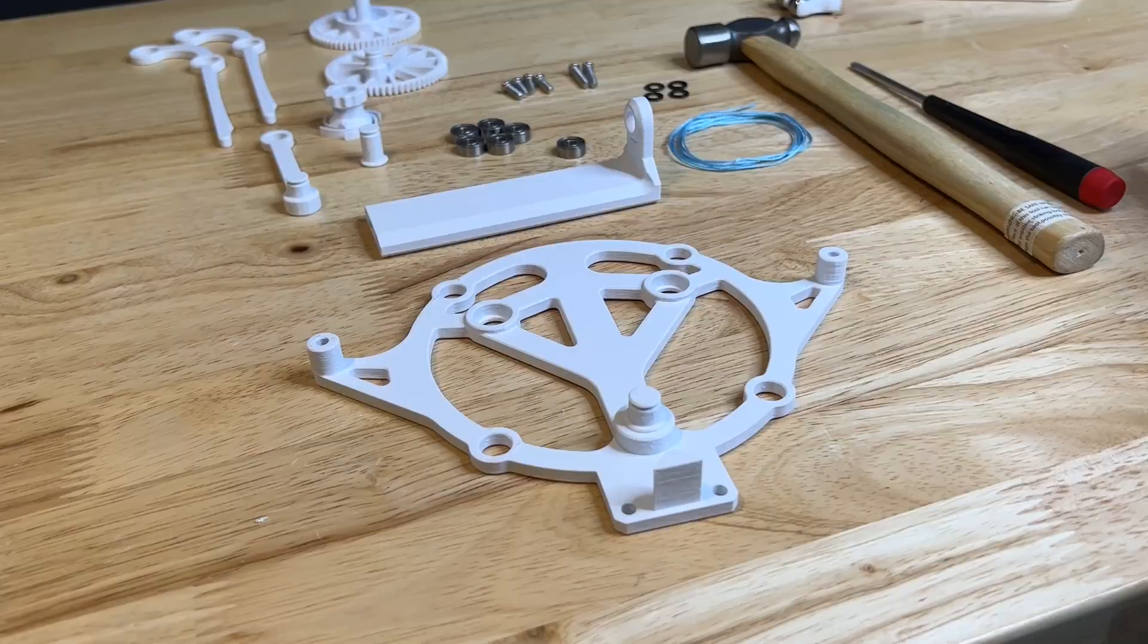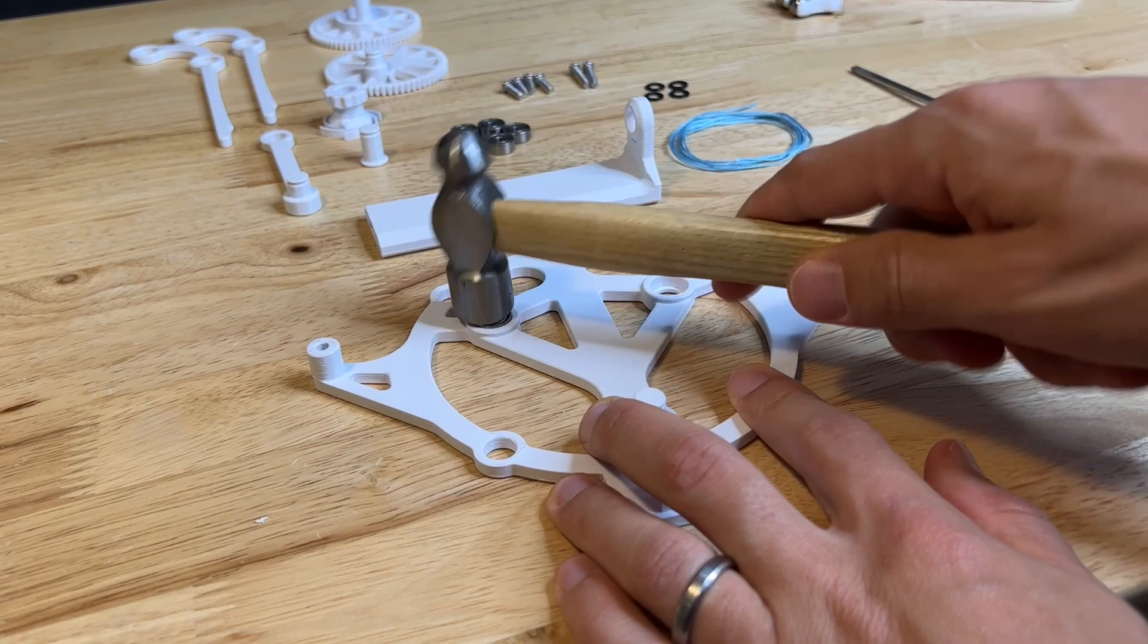Let's start with hammering some bearings into the base. Hammer them lightly. The plastic is soft so they will go in, and make sure you get both holes on the base.